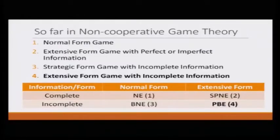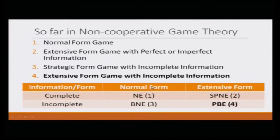Here is a table that gives a nice summary. Looking at the rows, there are two rows: complete information or incomplete information. In the columns we have normal form and extensive form game. If we take complete information with normal form, we get normal form game and the solution concept is Nash equilibrium.